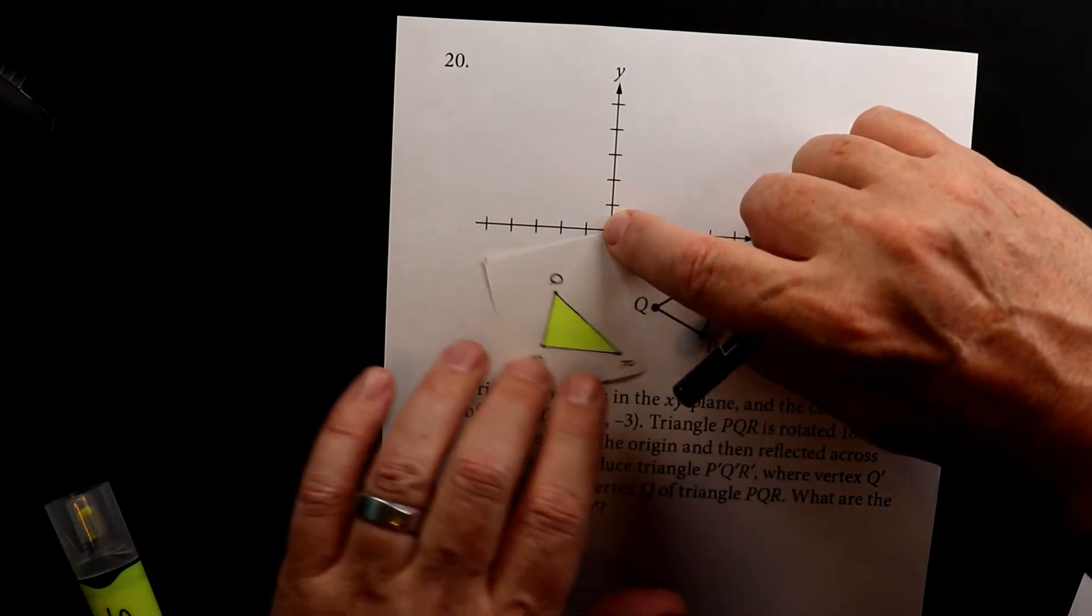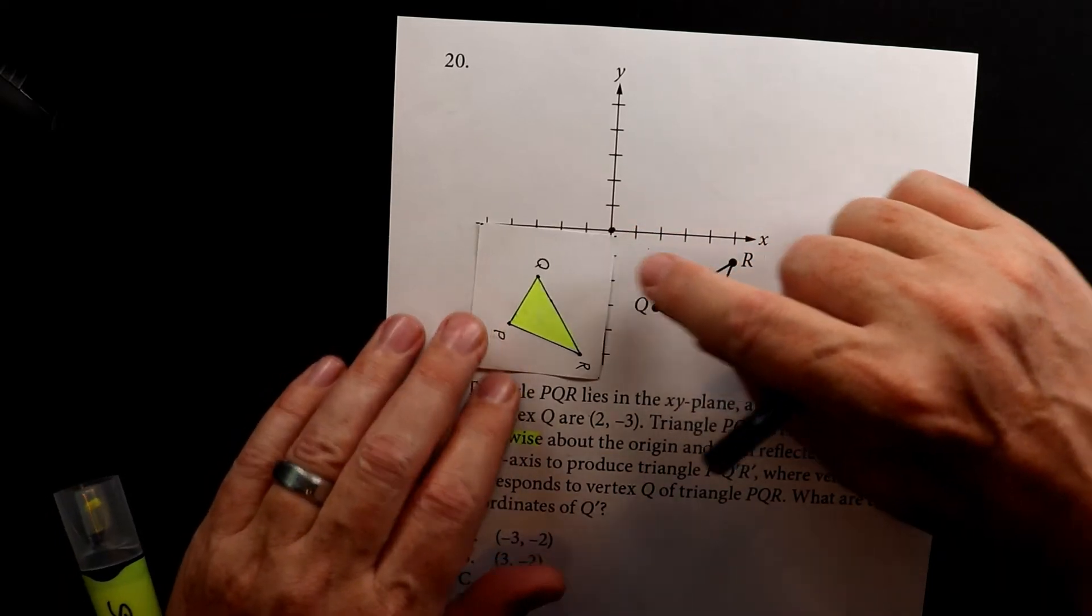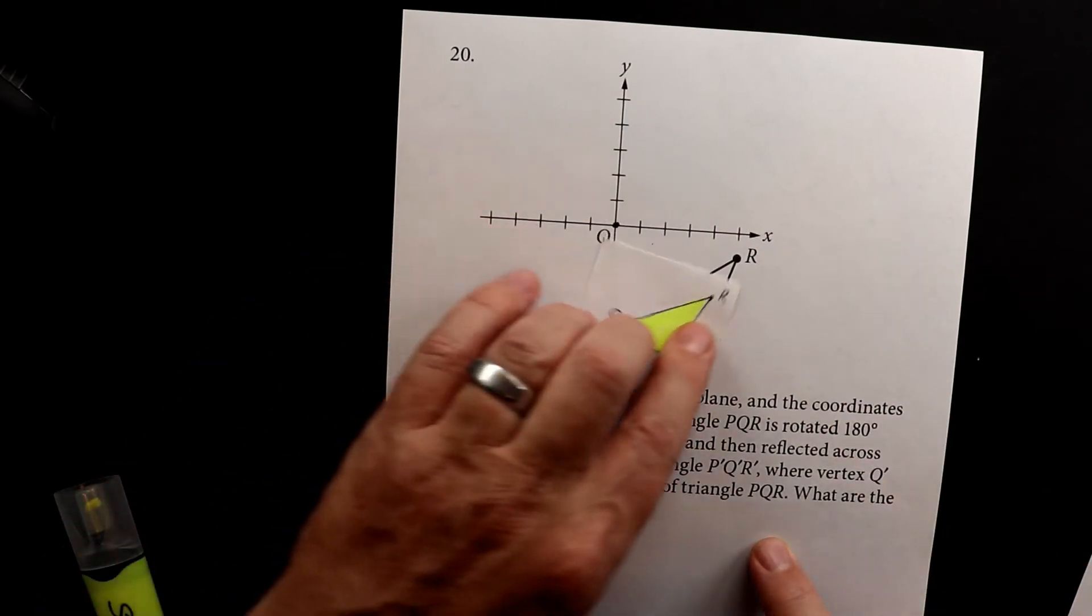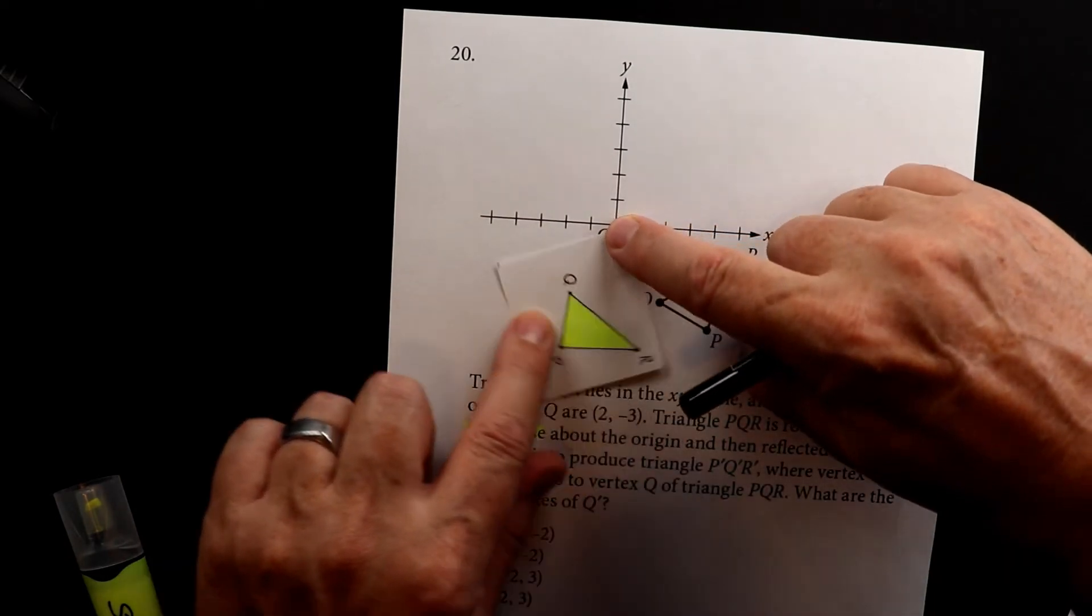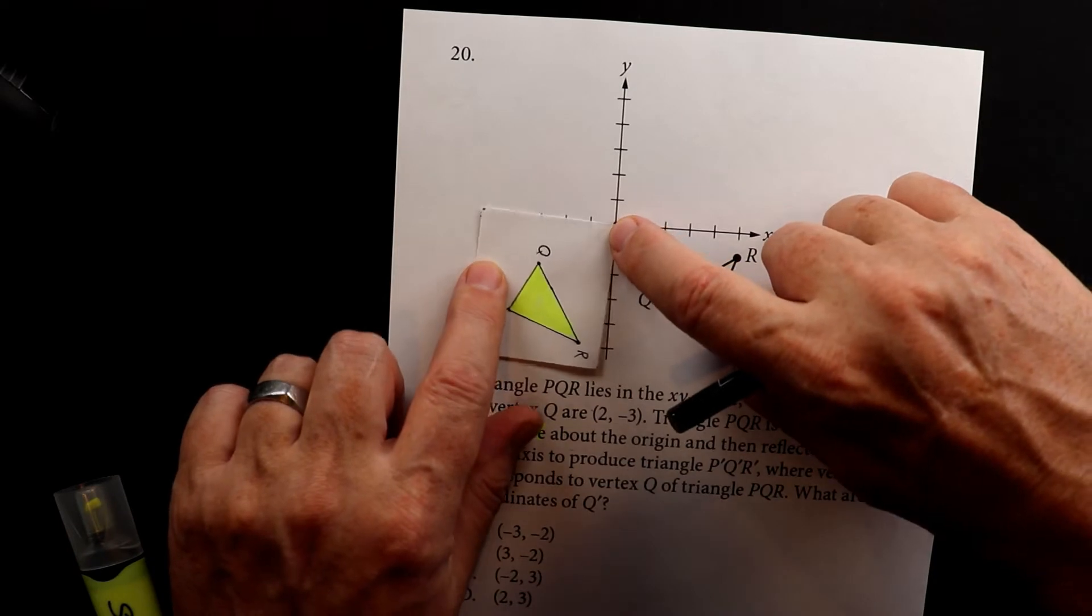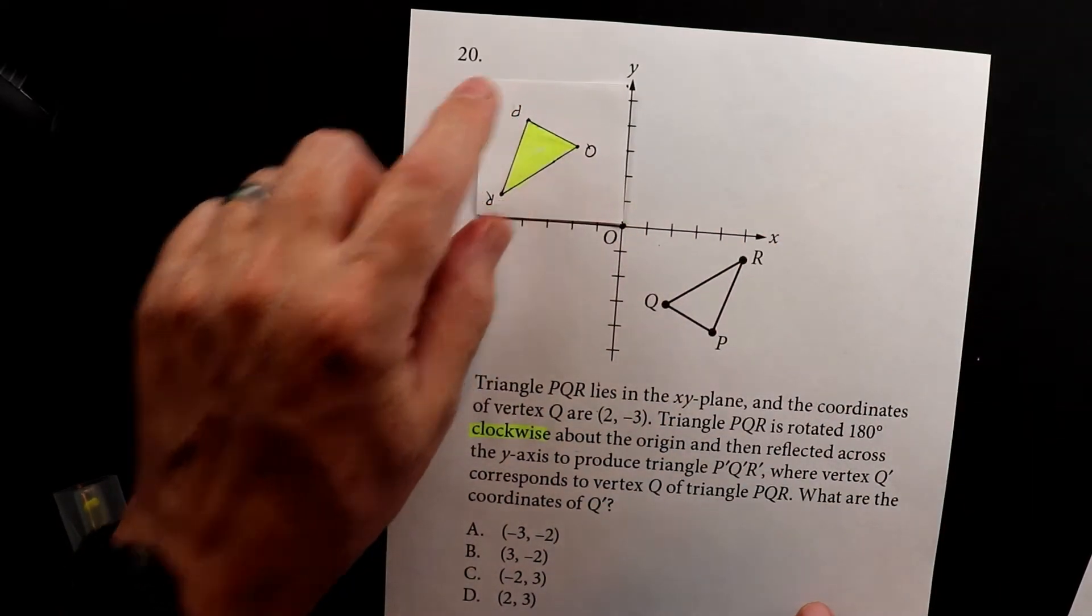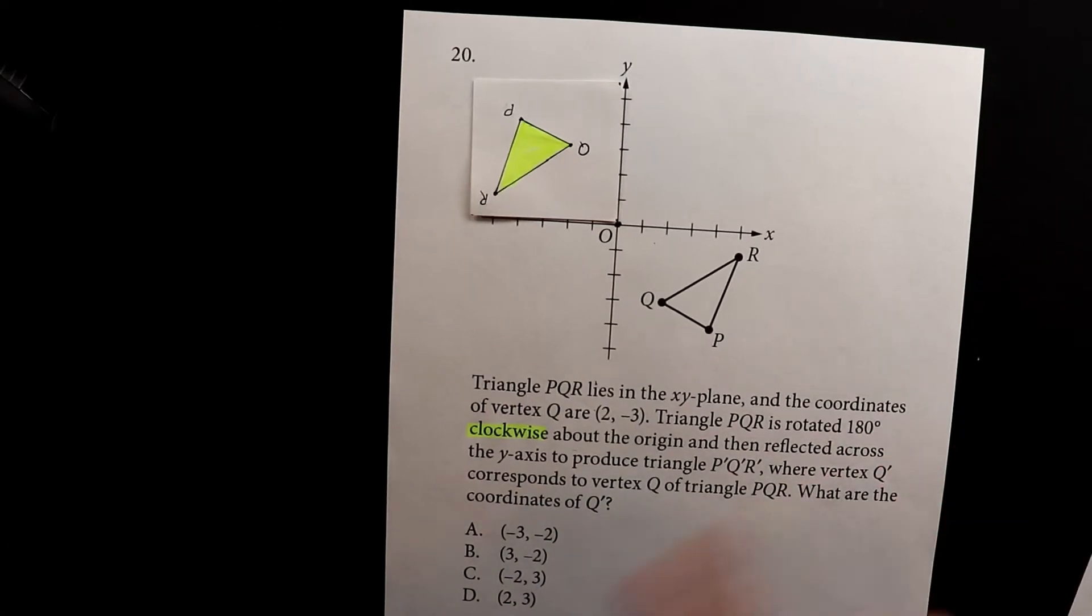Now, 90 degrees would just be that. That would be where you shift from one box to another. But they're saying clockwise, 180 degrees. So watch this. That's 90. 90 plus 90 is 180. So that's where we get when we rotate it 180 degrees, but it doesn't stop there.